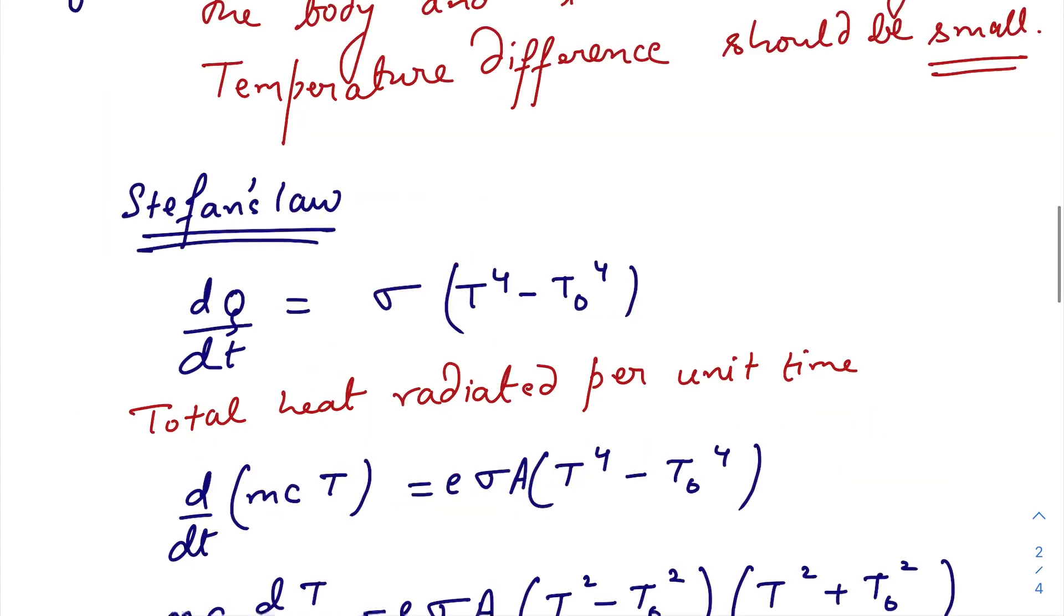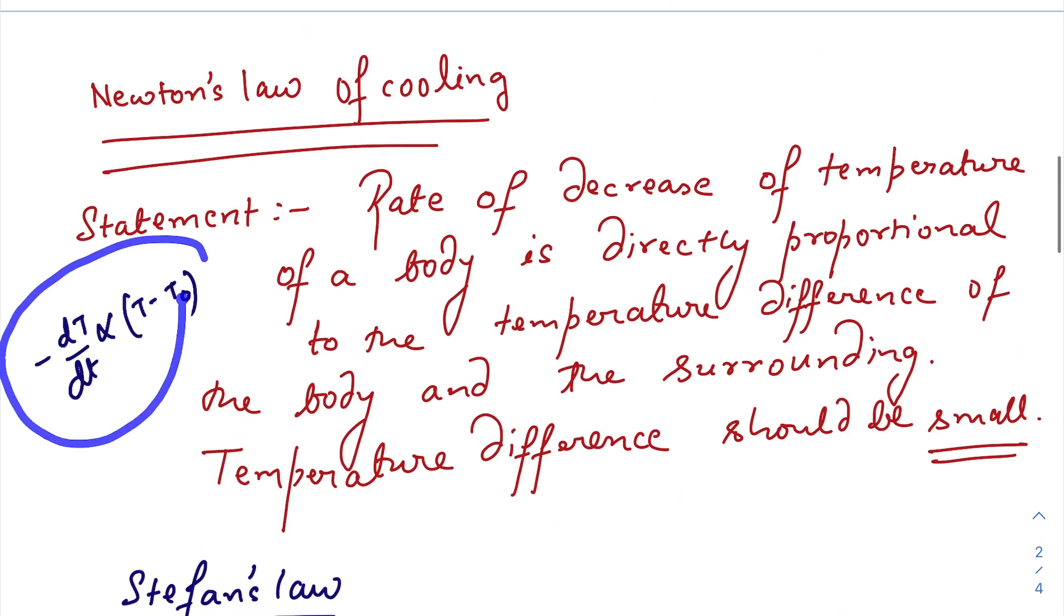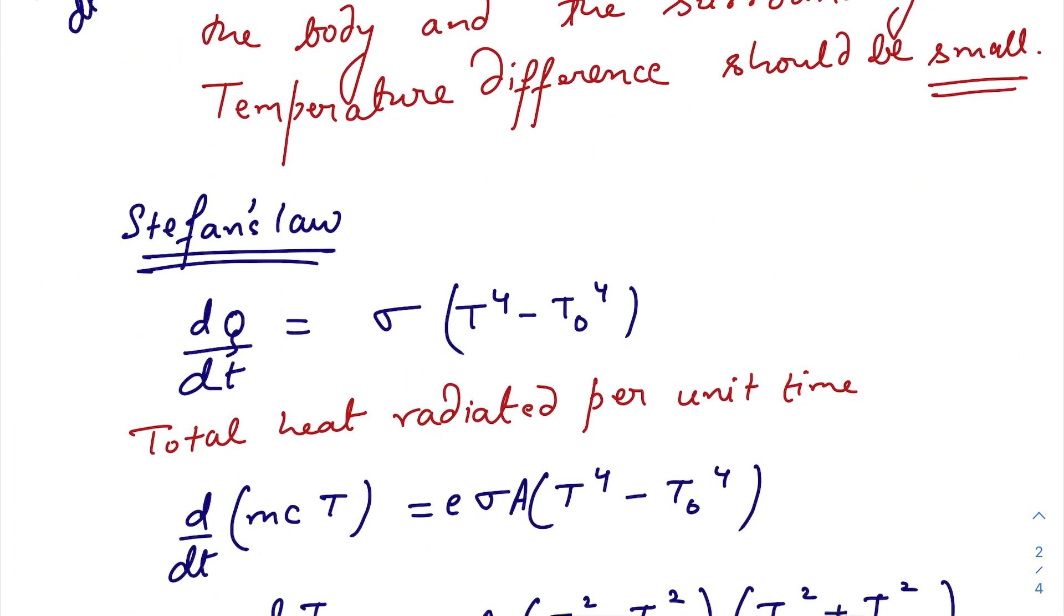Let us derive Newton's law using Stefan's law. What does Stefan's law say? If there is a body at temperature T, surrounding temperature is T0, the heat radiated per unit area per unit time normally is equal to Stefan's constant times T to the power 4 minus T0 to the power 4.